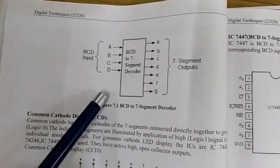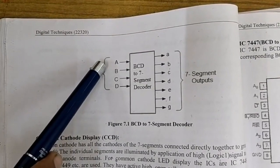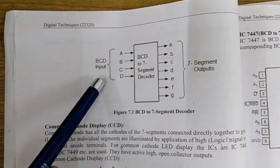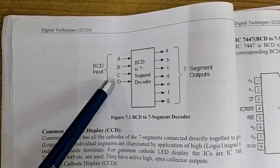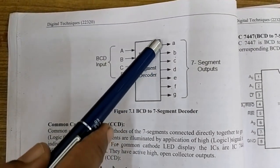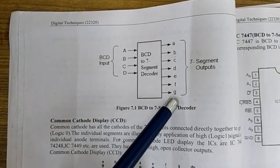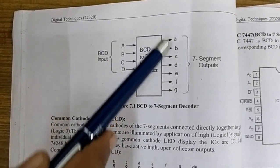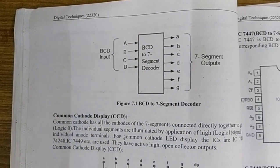This is the block diagram of a BCD to 7-segment decoder. The BCD number is always a 4-bit number, so the BCD input is given to 4 pins of the decoder, and the corresponding output in the form of 7 bits is obtained on pins A to G. This is the BCD to 7-segment decoder.